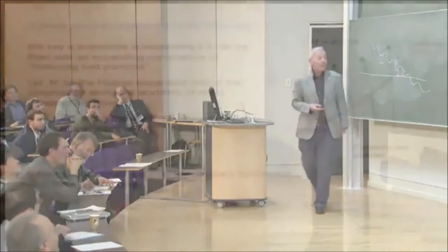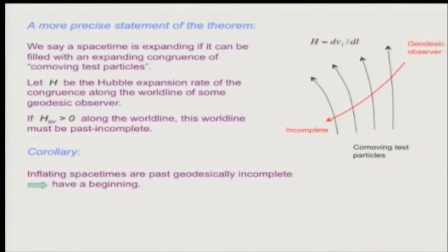Okay, so a more precise statement of the theorem. First of all, I should say that an expansion is not really a property of spacetime. It is a property of a congruence of geodesics in that spacetime. And we say that a spacetime is expanding if it can be filled with an expanding congruence of commoving test particles, that is geodesics. So these black lines represent this expanding congruence of geodesics. And I want to consider some other geodesic observer, different from these test particles, who is moving through these test particles.